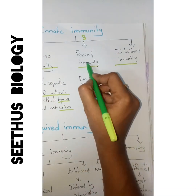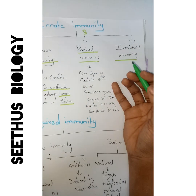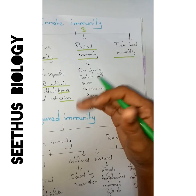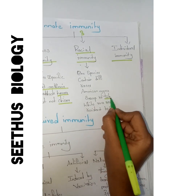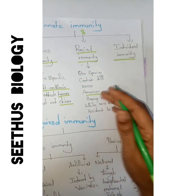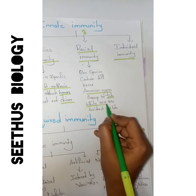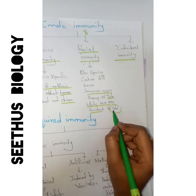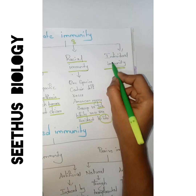Racial immunity refers to differences within one species. In human beings, different races exist — for example, American Negroes and white-race people. Tuberculosis is an example: American Negroes are more susceptible to this disease, meaning they are more frequently attacked by it, while white-race people are more resistant and the disease may not occur in them. This is the major difference illustrated by racial immunity.